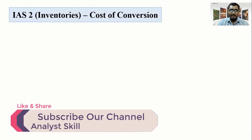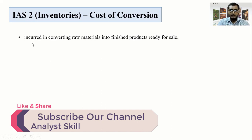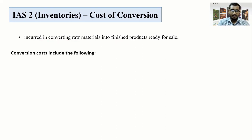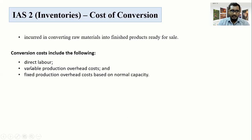As stated in IS-2, conversion costs are incurred in converting raw materials into finished products ready for sale. If you have raw materials, you produce sellable finished goods, and the cost incurred is the cost of conversion. The cost of conversion includes direct labor, variable production overhead costs, and fixed overhead costs based on normal capacity.